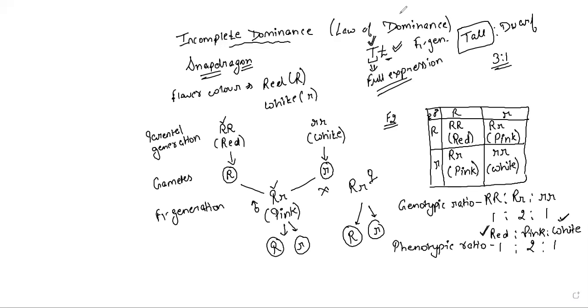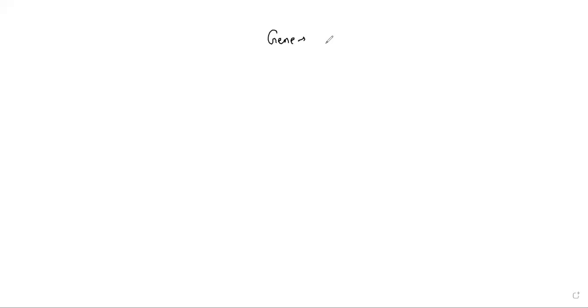Genes are controlling our characters. Talking about a simplified situation: a gene controls a character, and each gene in an individual is going to have two alleles — two allelic forms present on homologous chromosomes. This is a pair of homologous chromosomes, and here a gene is present.